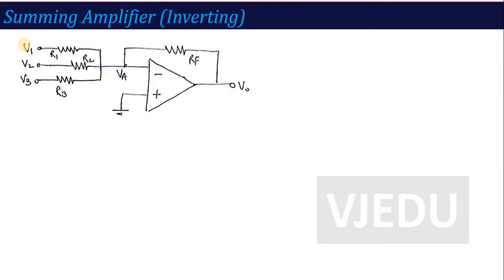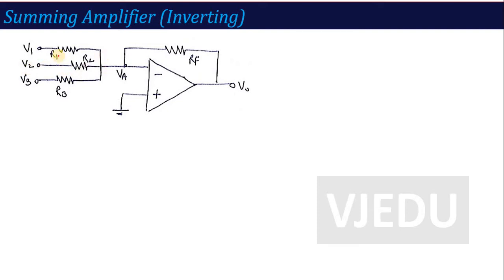The first application is the summing amplifier, and as the name defines, this is a summing amplifier. If you look at the circuit here, this circuit is totally the same as the inverting amplifier — there is a negative and positive terminal. The negative terminal has RF connected. On the negative side, instead of a single resistance with a single input supply, there are two more resistances applied — one for V2 supply and one for V3 supply. That means when more than one input supply is applied to the inverting terminal, it becomes a summing amplifier.